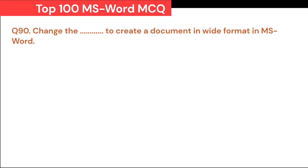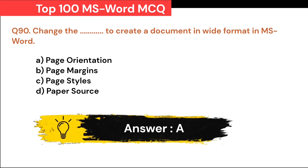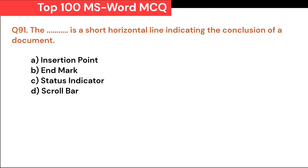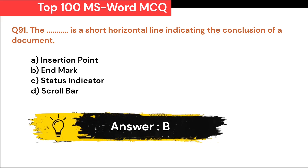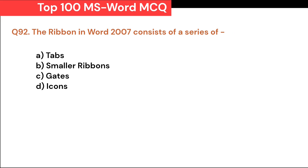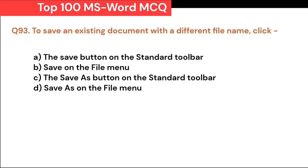Essential business letter elements include: A. Dateline and inside address. B. Message. C. Signature block. D. All of the above. Correct answer is D. All of the above. Change the Dash to create a document in wide format in MS Word: A. Page orientation. B. Page margins. C. Page styles. D. Paper source. Correct answer is A. Page orientation. The Dash is a short horizontal line indicating the conclusion of a document: A. Insertion point. B. End mark. C. Status indicator. D. Scroll bar. Correct answer is B. End mark.